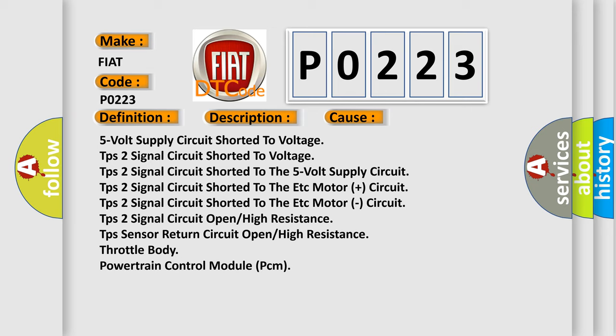5-volt supply circuit shorted to voltage, TPS2 signal circuit shorted to voltage, TPS2 signal circuit shorted to the 5-volt supply circuit, TPS2 signal circuit shorted to the ETC motor circuit, TPS2 signal circuit open or high resistance, TPS sensor return circuit open or high resistance, throttle body, or powertrain control module PCM.